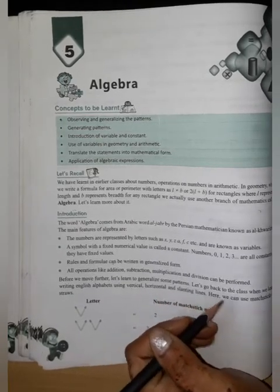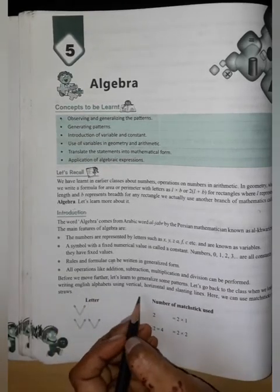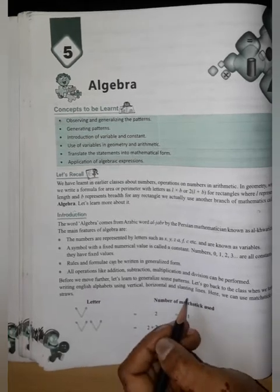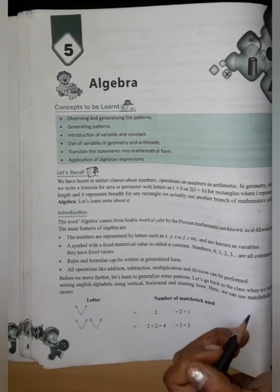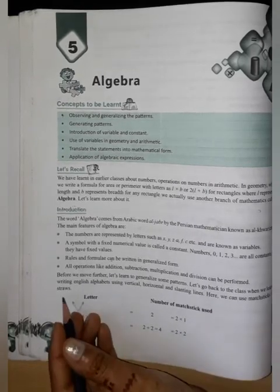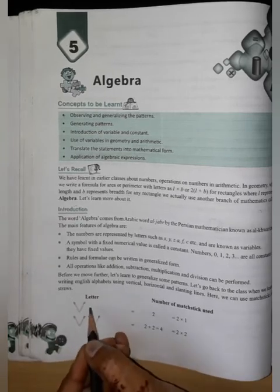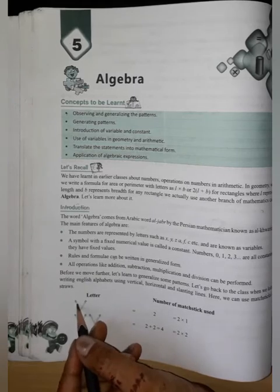Let's go back to the class when we learned to write English alphabets using vertical, horizontal and slanting lines. Here we can use matchsticks or strokes. What do we take here? Matchstick or stroke? Later, we use it, we write it.